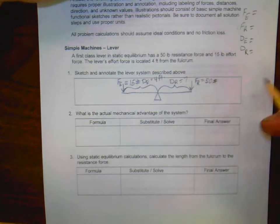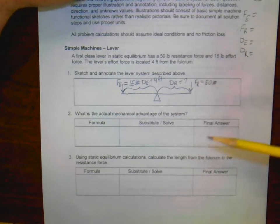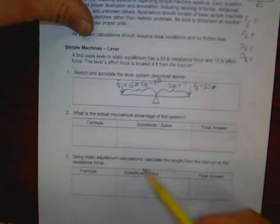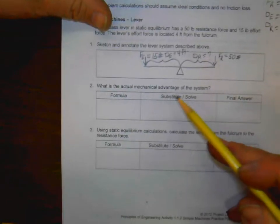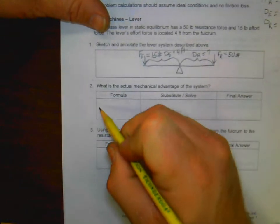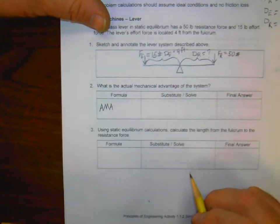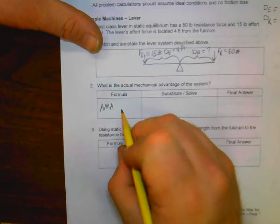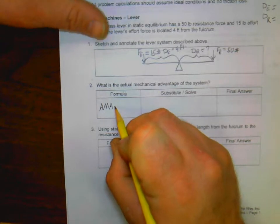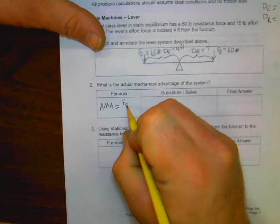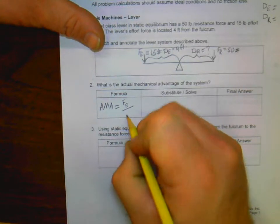Now, the next step, what is the actual mechanical advantage of the system? AMA. Now who remembers the formula? If you remember, actual mechanical advantage equals FR over FE. So the force of the resistance divided by the force of the effort. So here, all we now have to do in the center is substitute and solve.